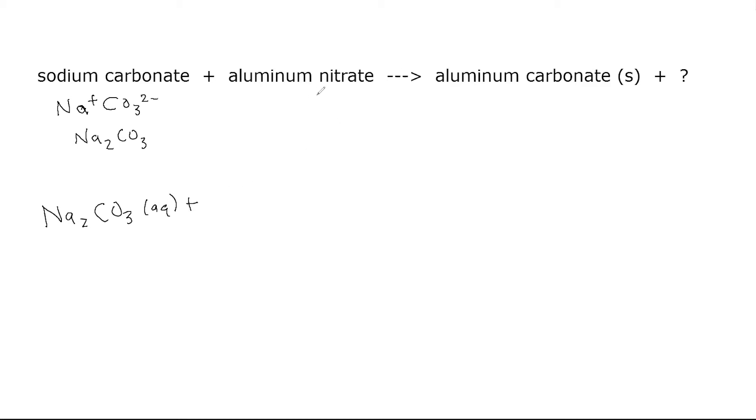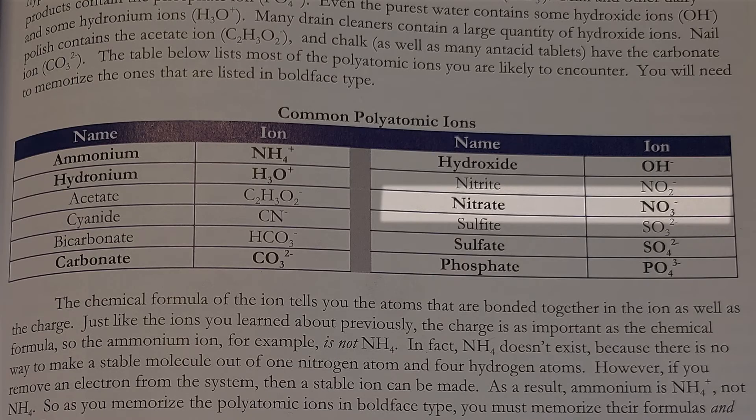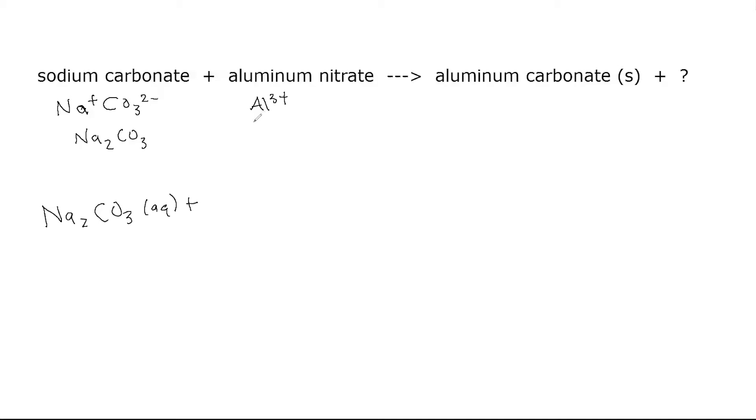Plus aluminum nitrate. Aluminum is in column 3A on the periodic table, so it has a 3+ charge. Our polyatomic ions table tells us that nitrate is NO3 minus - a one negative charge. The formula is Al with three NO3 ions, so we swap and drop to get Al(NO3)3. That's also aqueous.